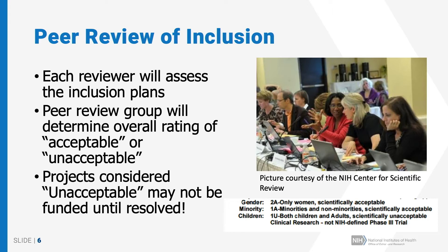You can see on the right an example of what you may see on your summary statement. If you're doing NIH-funded research, your summary statement will include codes for gender, minority, and children, and the code will indicate whether reviewers found the population you proposed to be acceptable or unacceptable. In the example provided, the gender and minority populations were considered acceptable, but the population based on age was considered unacceptable. In this case, the study could not be funded until any concerns regarding the age of participants are resolved.